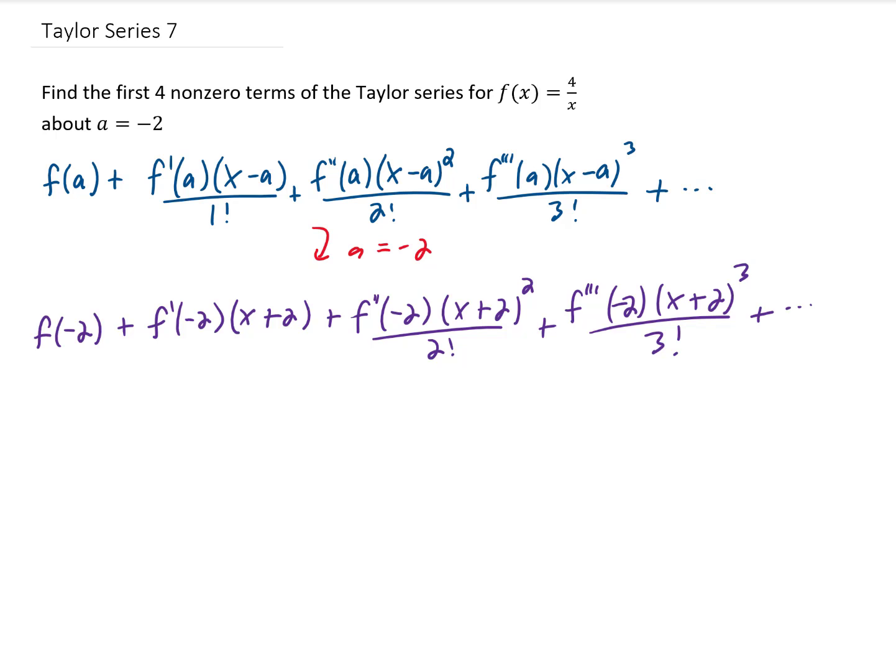And let's hope that all four of these coefficients on these terms is not zero. And basically what we need to do is plug our x value of negative 2 into the original function and into three different derivatives for this function. Alright, let's take some derivatives first.